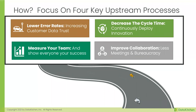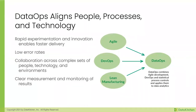What DataOps focuses on is four specific processes to improve. The first is how do you lower your error rates in production — how do you make sure you don't deliver wrong data, bad charts, or a model that's off so your customers don't trust the data? The second is how do you decrease cycle time — how fast can you get something from a development environment into production, properly regressed, without problems?